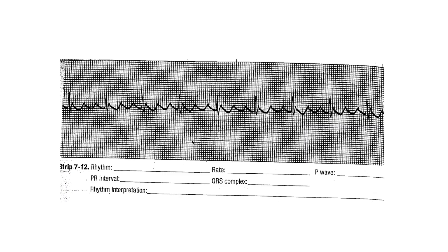In this rhythm, the ventricular rate is regular, so we can use the small box conversion table - that gives a rate of 79. The flutter waves are at a rate of 237.